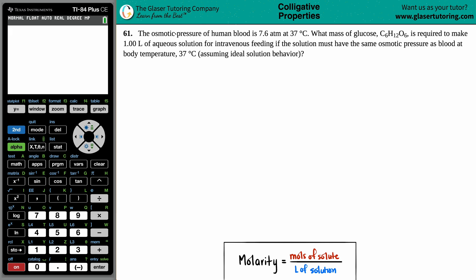Number 61. The osmotic pressure of human blood is 7.6 atms at 37 degrees Celsius. What mass of glucose, C6H12O6, is required to make 1.00 liters of an aqueous solution for intravenous feeding if the solution must have the same osmotic pressure as blood at body temperature, 37 degrees Celsius, assuming ideal solution behavior.